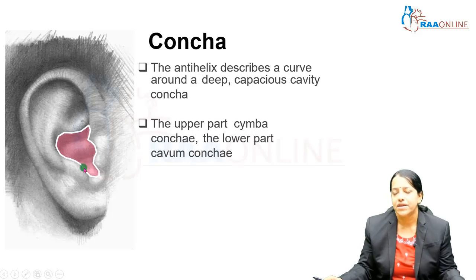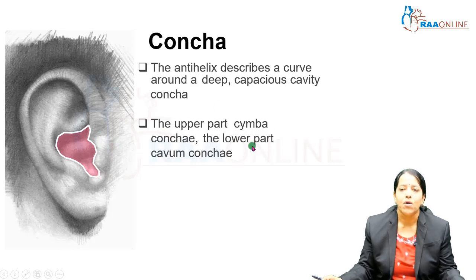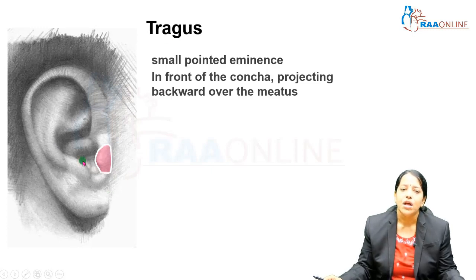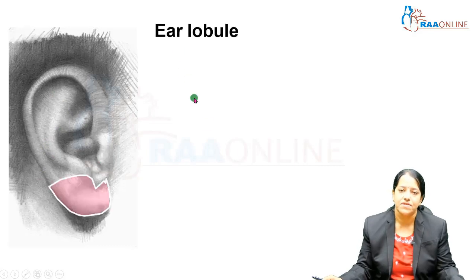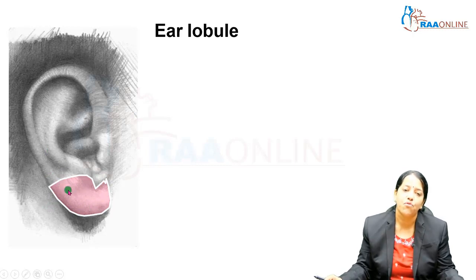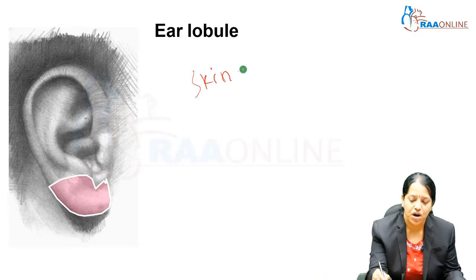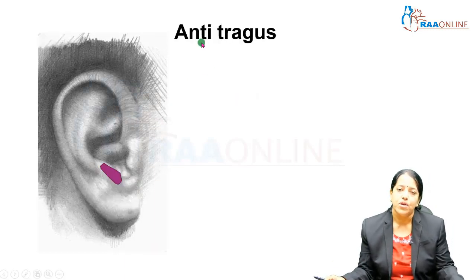Coming to the inner aspect just surrounding the external auditory meatus, we have the concha. The upper part is the cymba concha and the lower part is the cavum concha. Just opposite the concha, there is a small pointed eminence in front projecting outward — this is called the tragus. So you have the helix, the anti-helix, the concha, and the tragus. Below this is where the ear can be pierced — this part has no cartilage, it is just a fold of skin, and this is called the lobule. Just above the lobule is a small portion called the anti-tragus, which is opposite to the tragus.